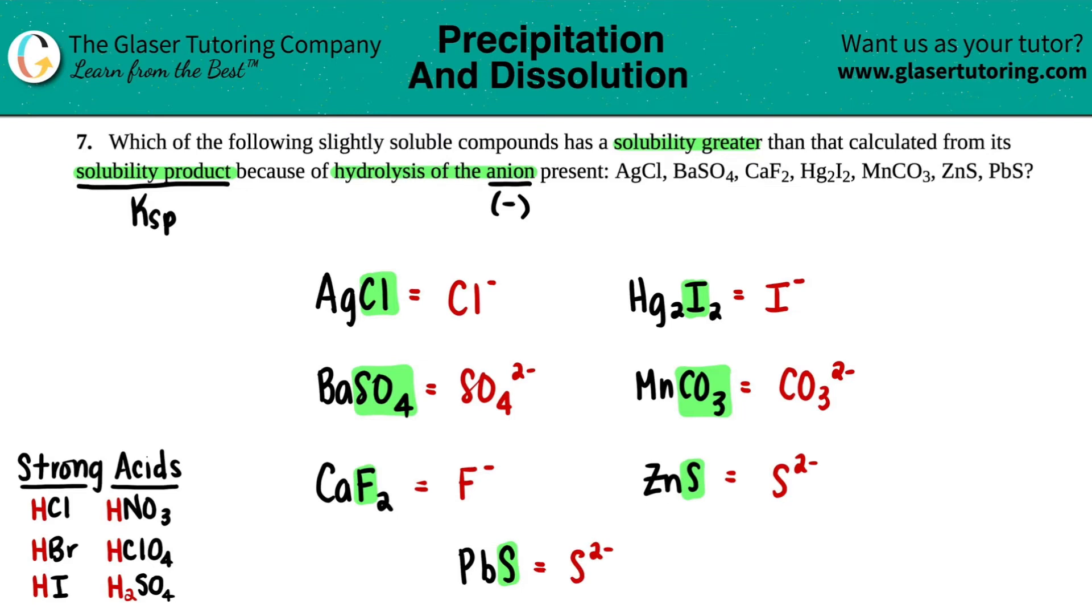And then the last one we have: PbS. We have another S, that's the same thing, so this would also be an S2 minus. Okay, now this is the part that comes from knowledge of an earlier chapter.